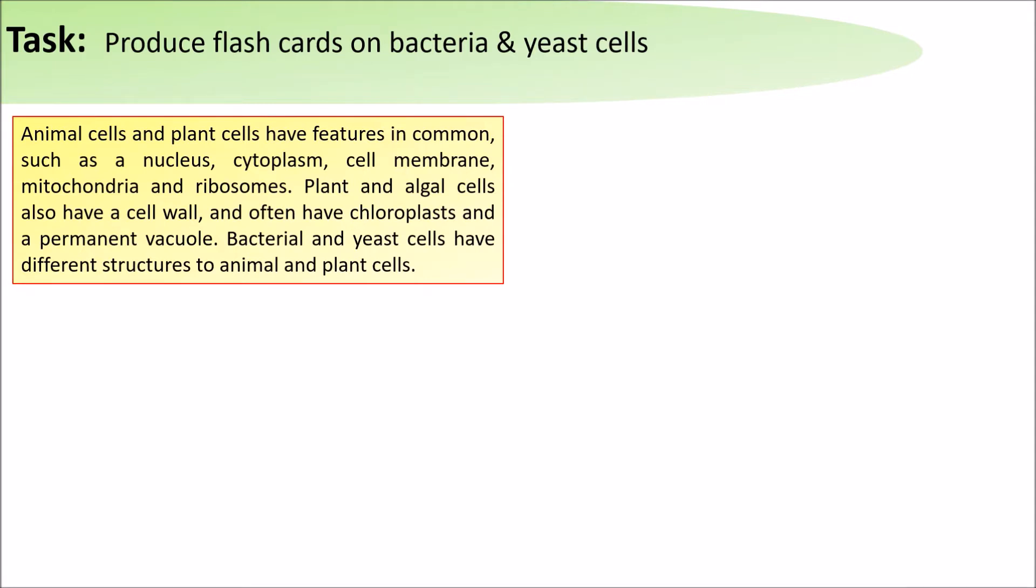Plant and algal cells also have a cell wall and often have chloroplasts and a permanent vacuole. Bacteria and yeast cells have different structures to animals and plant cells.